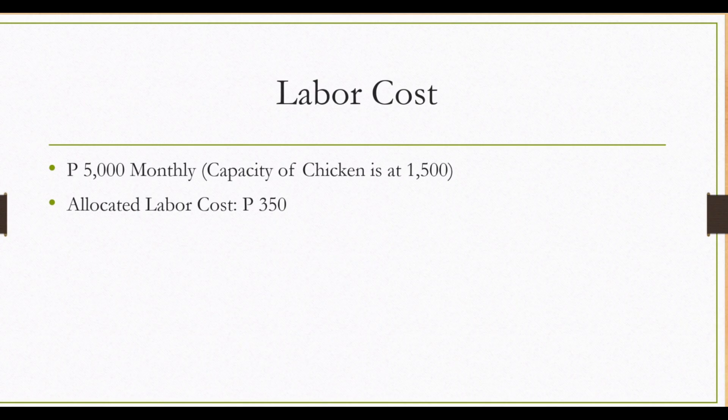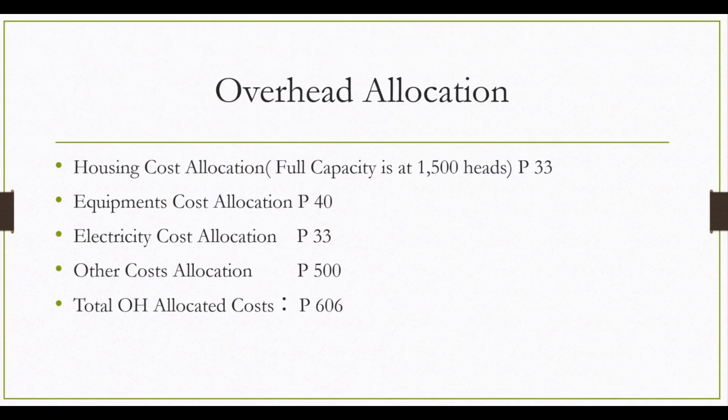The fourth component of our costing is the labor cost associated in raising chickens — this is the salary of the farmhand who is taking care of the chickens. The amount is 5,000 pesos monthly. Suppose the capacity of the chicken house is 1,500 heads; the allocated labor cost for 100 heads is 350 pesos.